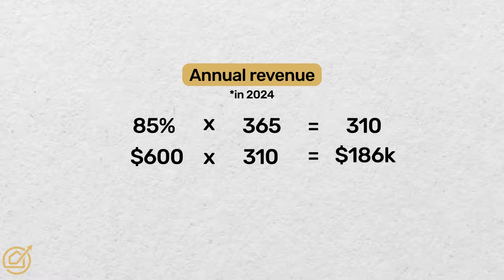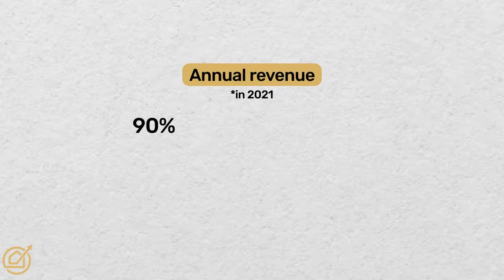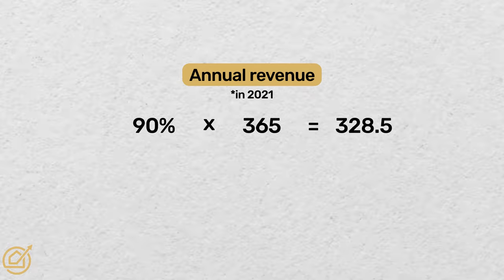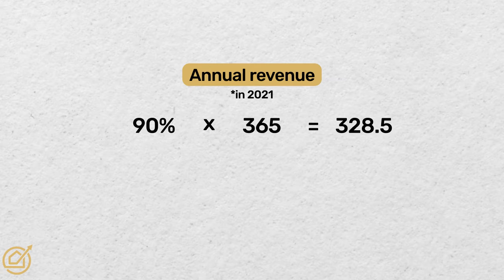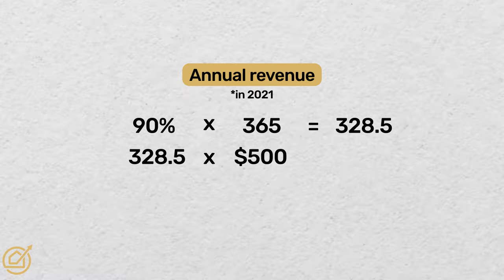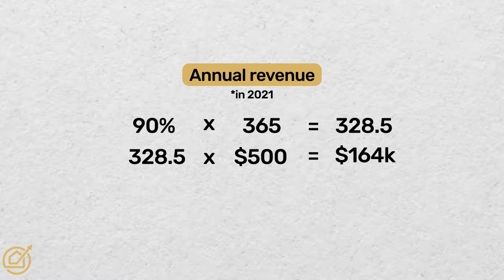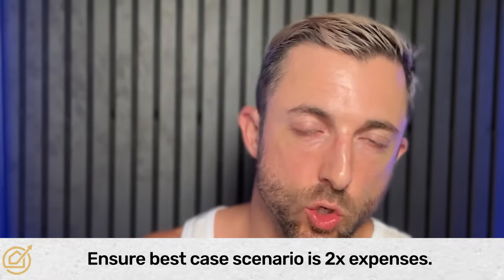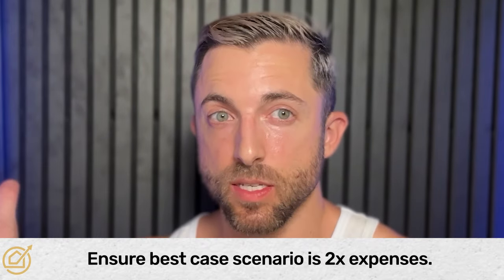That's the 2024 estimate. In 2021, things were a little different — we were at 90% occupancy, which is 328.5 days, multiplied by an average rate of $500, which equals $164,000. That was the high-end estimate of my revenue. Whenever I'm doing revenue estimates I always do a high-end and a low-end — two estimates. Some do three; I think that's unnecessary. High-end and low-end: if you're somewhere in there, you did a good estimate.